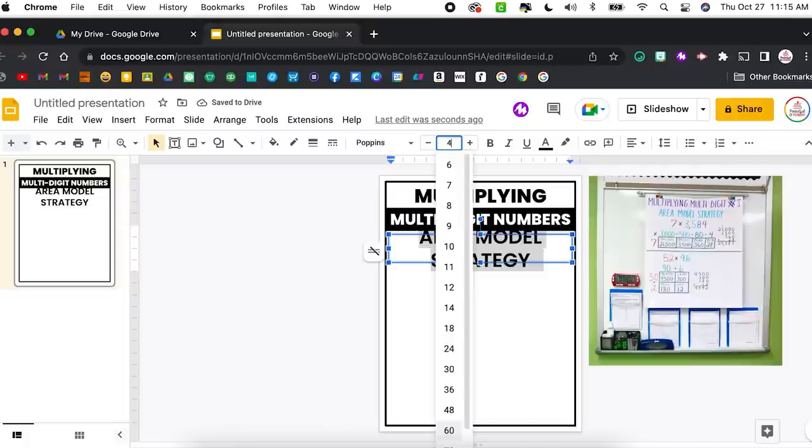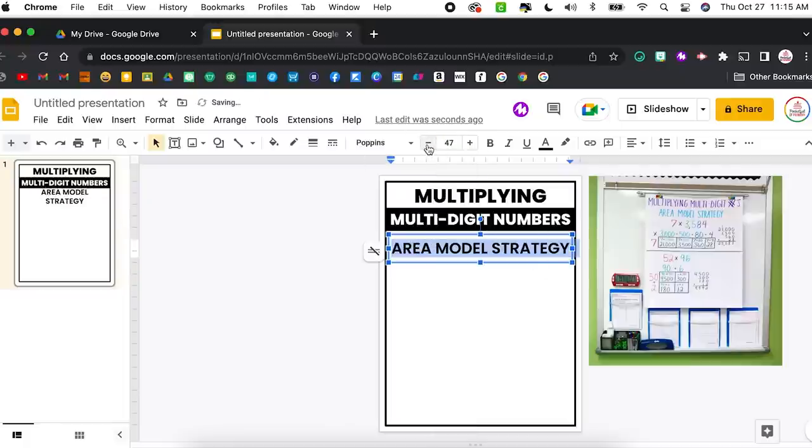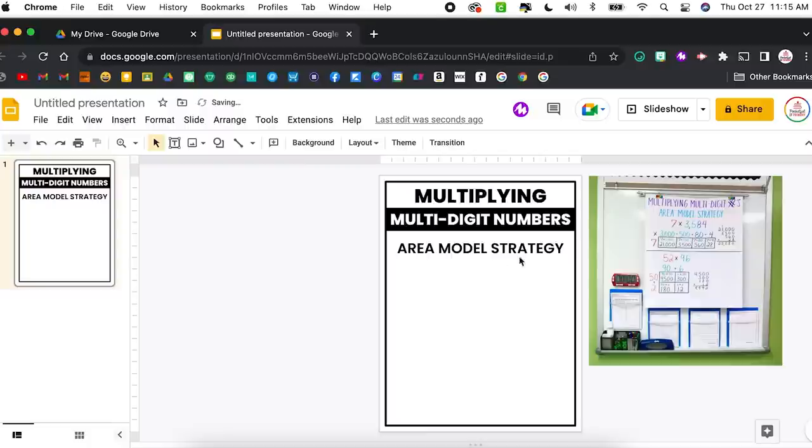I'm going to click three times to highlight all that text and type area model strategy. And I'm going to highlight all of it by hitting command a or control a, we're going to change it to semi bold. That looks good. And let's try size 48. Nope. Still got to go smaller. So I'm just going to click the decrease font size. Let's go 44. That way we have a little wiggle room and then I'm going to move that up slightly.